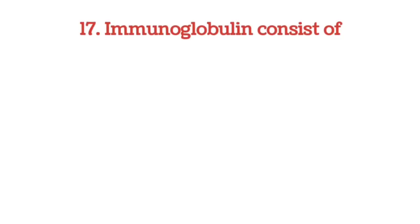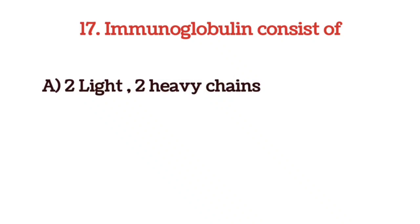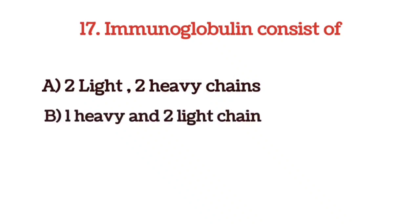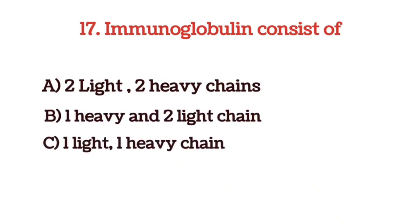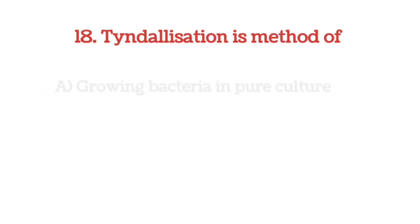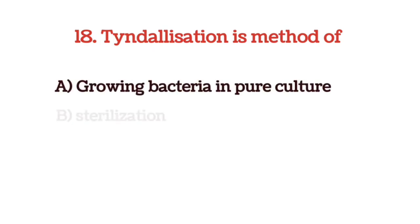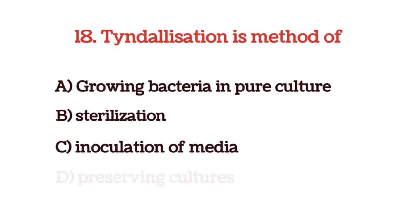Next question: immunoglobulin consists of — options are 2 light and 2 heavy chains, 1 heavy and 2 light chains, 1 light and 1 heavy chain, and heavy chains only. The answer is option A, 2 light and 2 heavy chains — one immunoglobulin consists of these. Tyndalization is a method of — options are growing bacteria in pure culture, sterilization, inoculation of media, and preserving cultures. The answer is option B, sterilization.